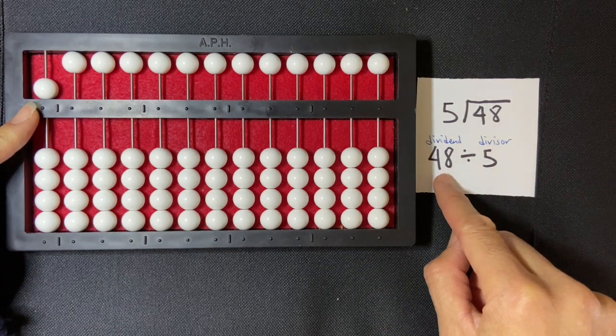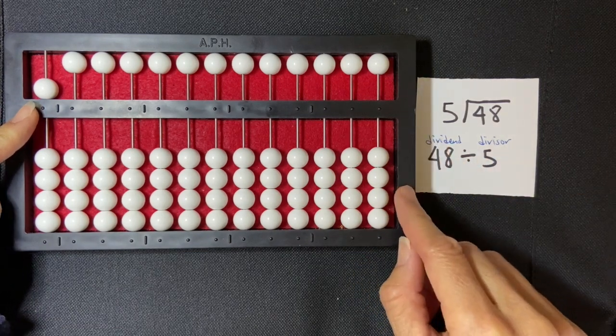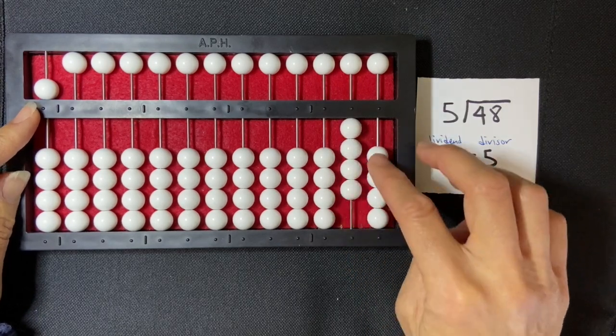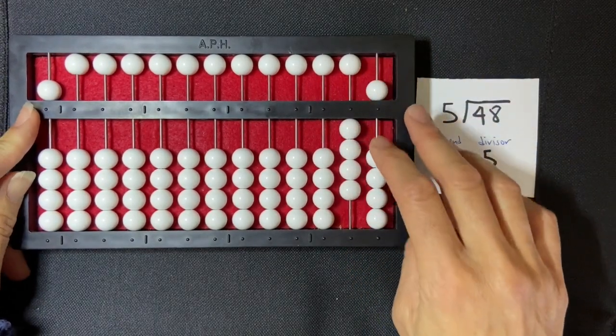And then I'm going to set my dividend, which is 48, on the far right hand side of my abacus. So 1, 2, 3, 4. 1, 2, 3, 4, 5, 6, 7, 8.